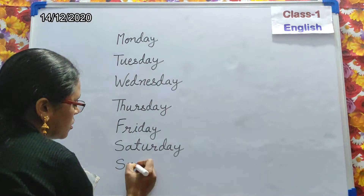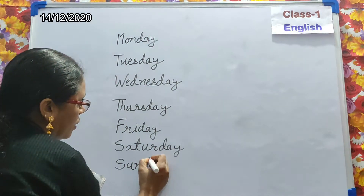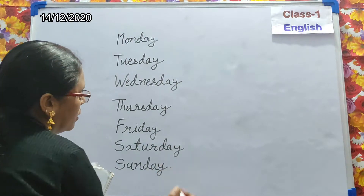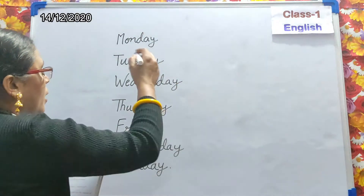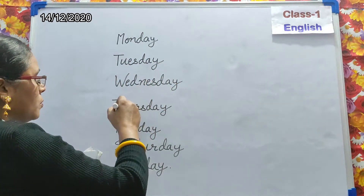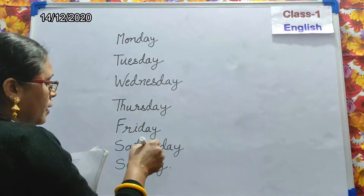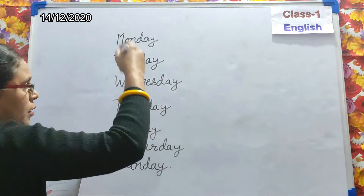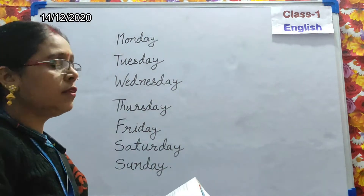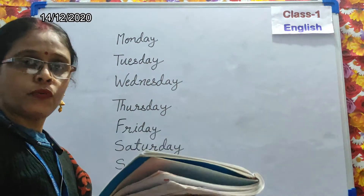Monday, Tuesday, Wednesday, Thursday, Friday, Saturday, Sunday — these are the seven days of a week.